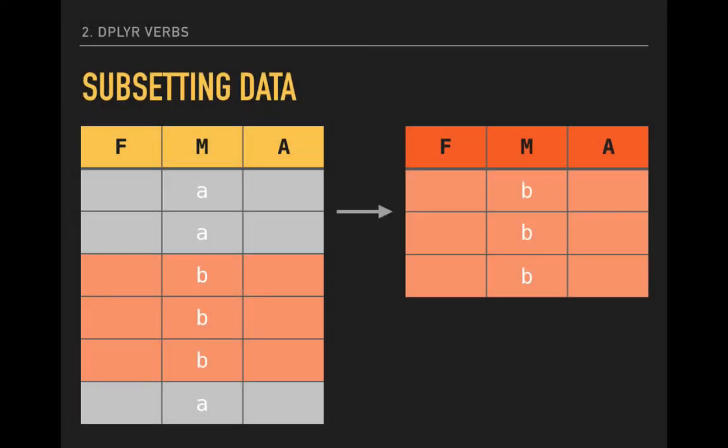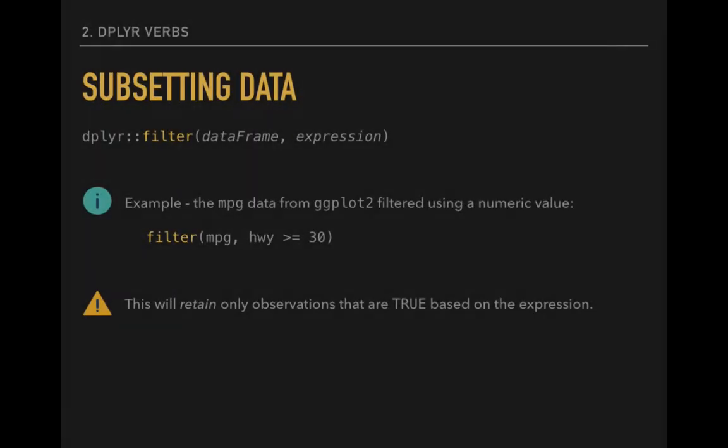Sometimes we only want to look at some of our observations. Perhaps in the variable M on the left-hand data frame, there are A and B values, and we are only really interested in the B values at the moment. We can easily subset our data to isolate these observations, as in the data frame on the right. The verb for this action is filter. When we filter our data, we isolate particular observations that meet one or more characteristics defined by an expression.